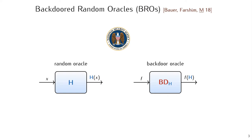In the BROS model, the adversaries have adaptive and unrestricted access to both of these interfaces. So, the adversary can query the random oracle H and also its backdoor oracle BDH.